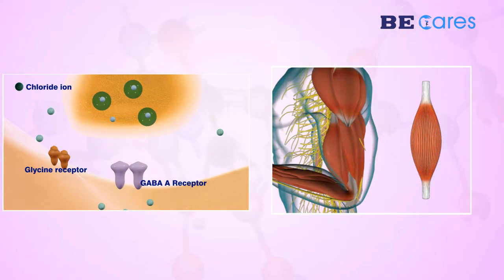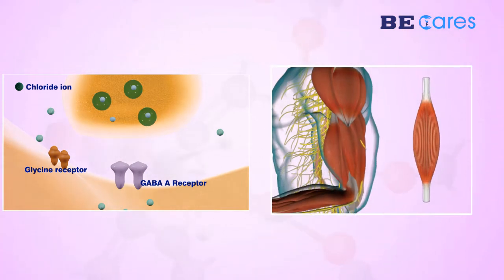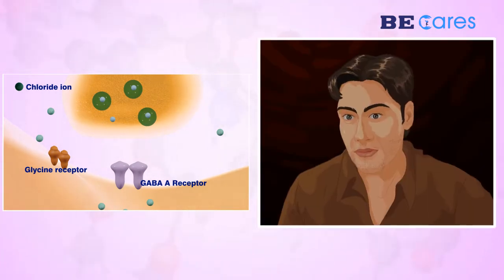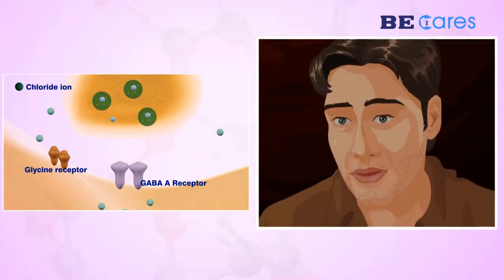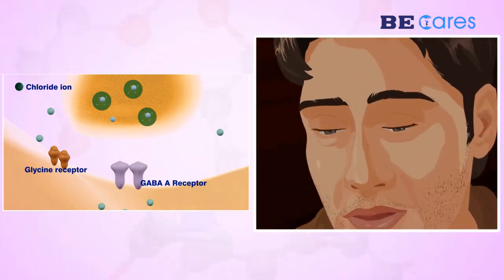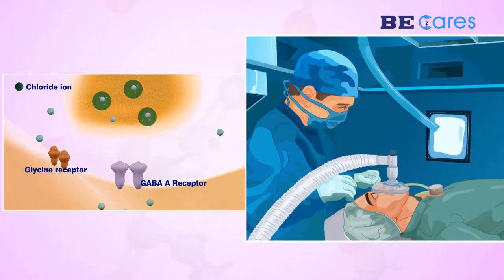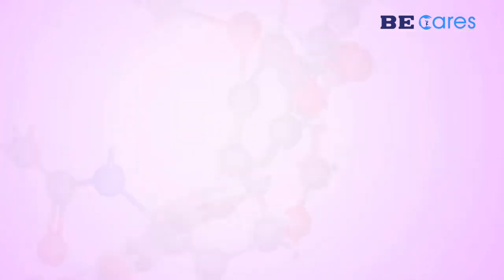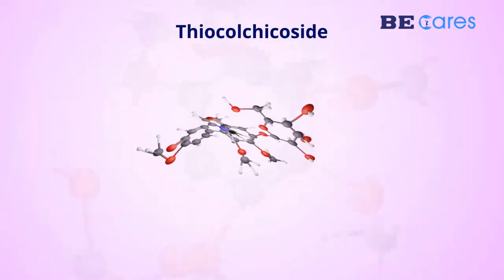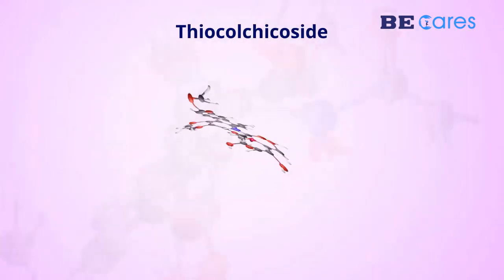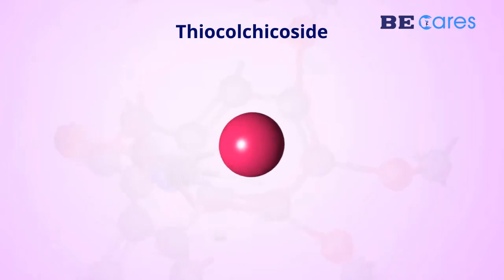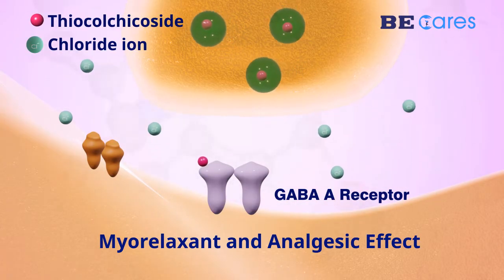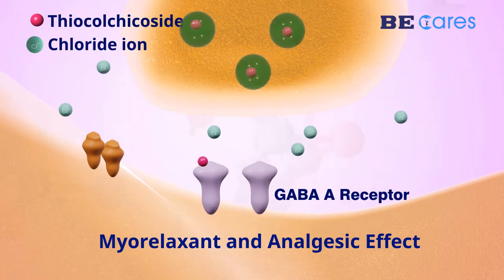GABAergic neurons are involved in myorelaxation, anxiolytic treatment, sedation and anesthetics. Thiocolchicoside's GABA-mediated action induces both myorelaxant and analgesic effects.